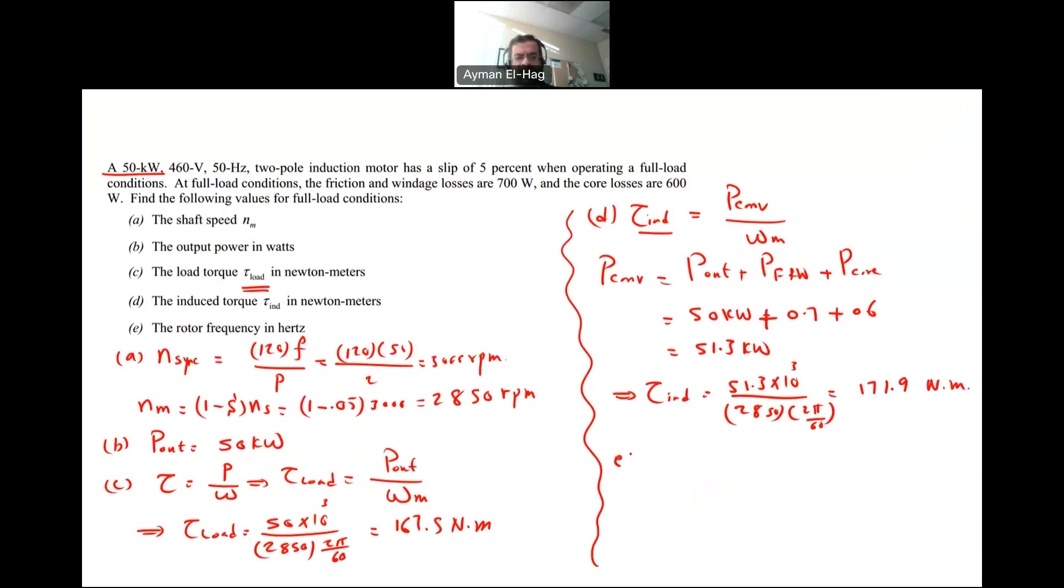The last question is, is to find the rotor frequency. So I want to find the frequency in the rotor is equal to the slip times the frequency in the stator. This is 0.05 times the frequency in the stator, which is 50 hertz. And this will give me 2.5 hertz.